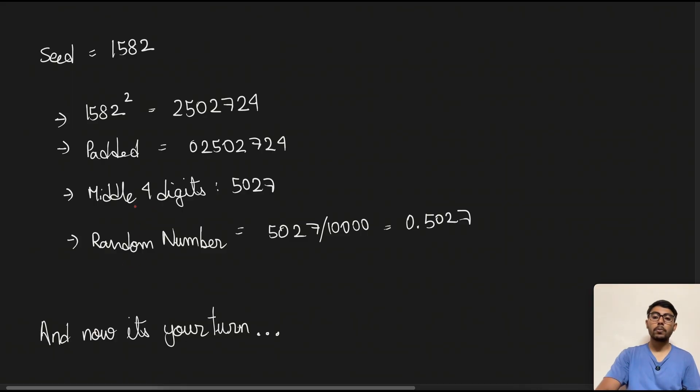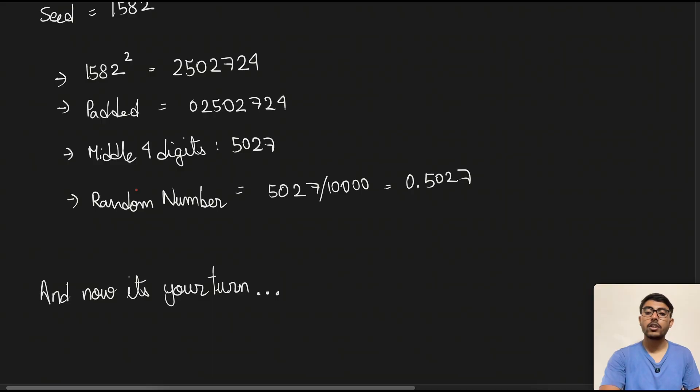So the steps would be the same: first square it, extract the middle four digits, and then divide by 10,000. And you may pause the video here and resume once you are done, and drop your answers in the comment section below.